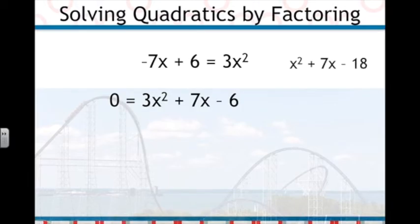First, we'll multiply the negative 6 by 3 to get x squared plus 7x minus 18 and put a 3x in both sets of parentheses.